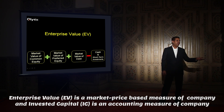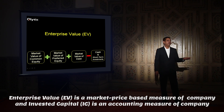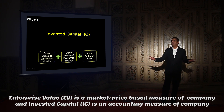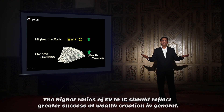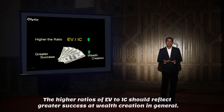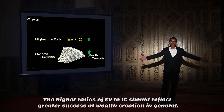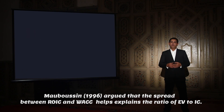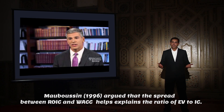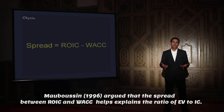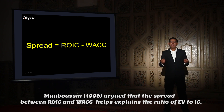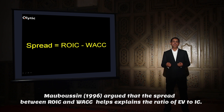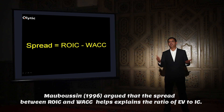Enterprise Value (EV) is a market-price-based measure of a company, and invested capital is an accounting measure of a company. The higher the ratio of enterprise value to invested capital, the greater the success at wealth creation in general. Maboussin (1996) argued that the spread — the difference between ROIC and WACC — helps explain the ratio of enterprise value to invested capital.